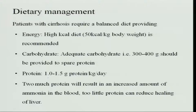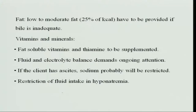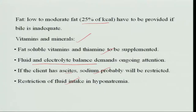Dietary management of cirrhosis: give high calorie — 50 kilocalories per kg body weight, compared to the normal 30 to 40 kilocalories. Carbohydrate should be an adequate 300 to 400 grams and protein 1 to 1.5 grams per kg body weight, because too much protein leads to release of large amounts of ammonia when metabolized. Low fat at 25 percent of kilocalories should be provided. Vitamins and minerals should be given liberally, fat-soluble vitamins and thiamine should be supplemented, fluid and electrolyte balance maintained. If the patient has ascites, sodium should be reduced; if there is hyponatremia, fluid intake should be reduced to normalize sodium levels.